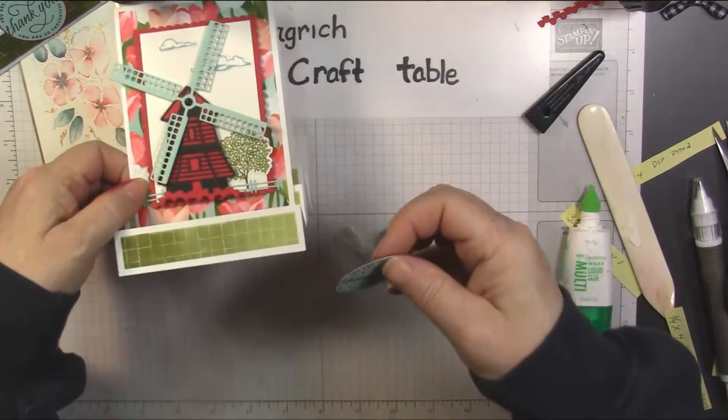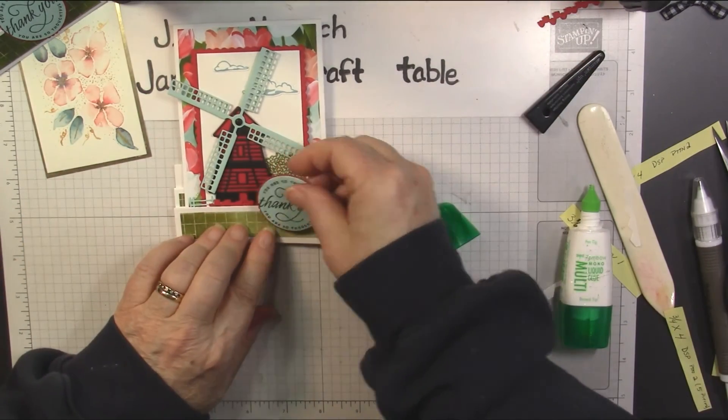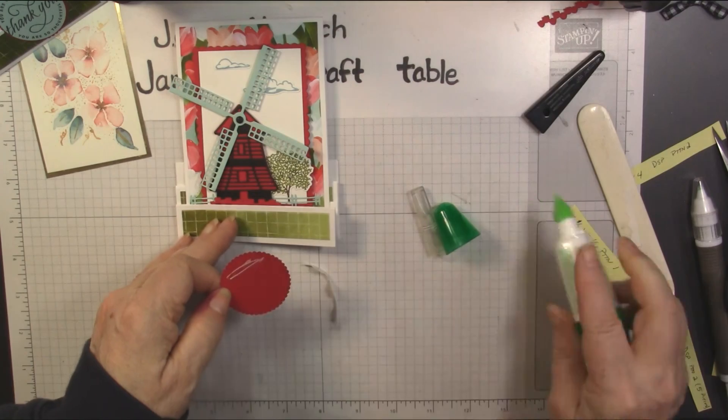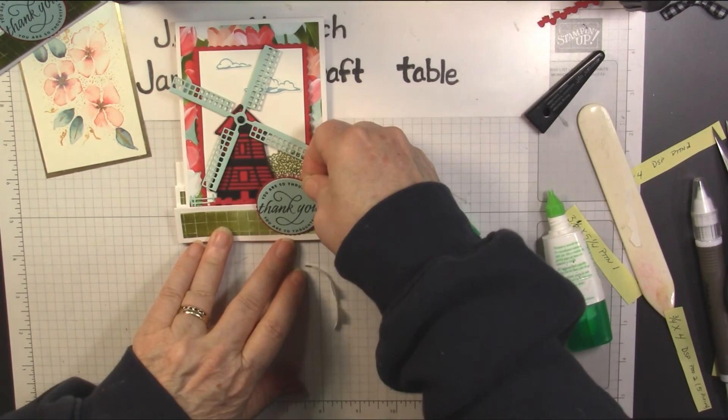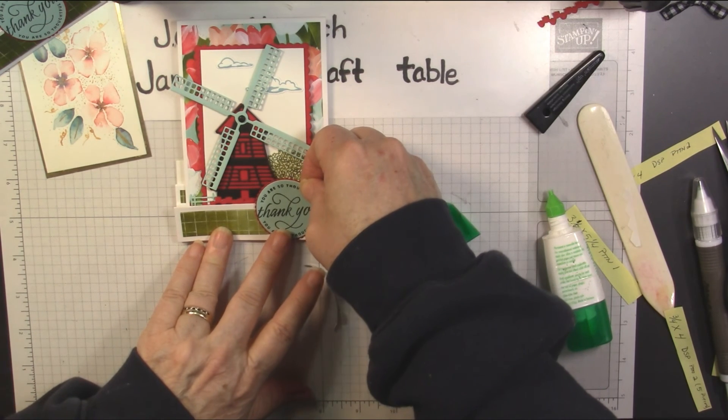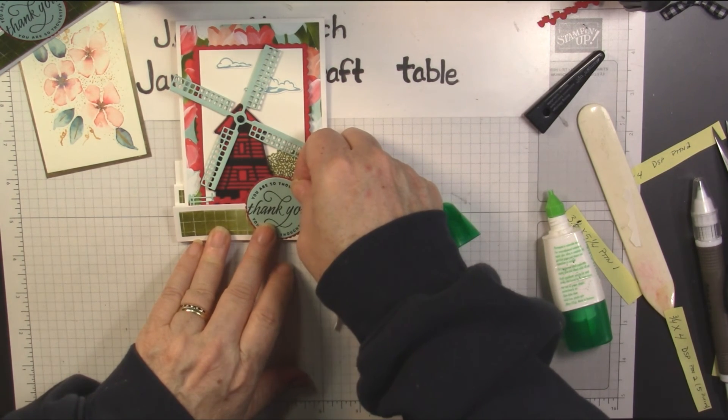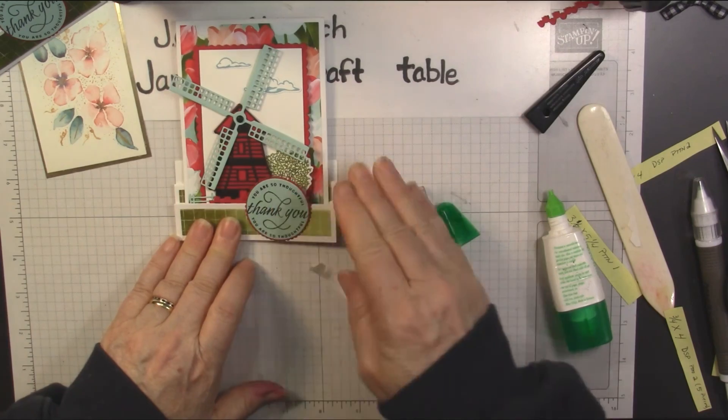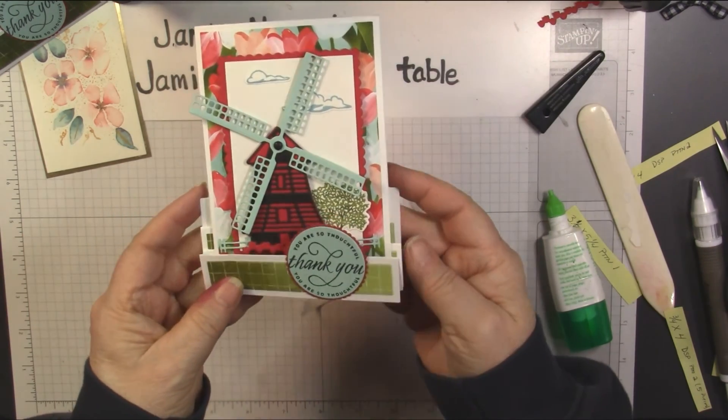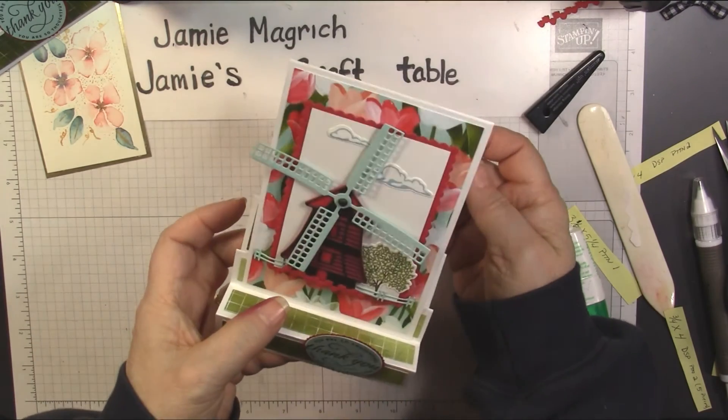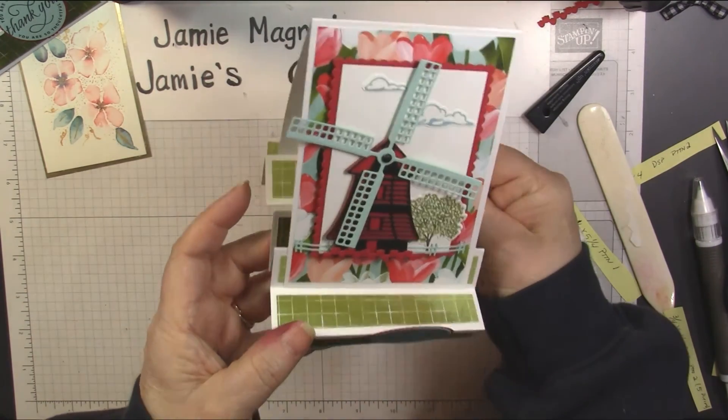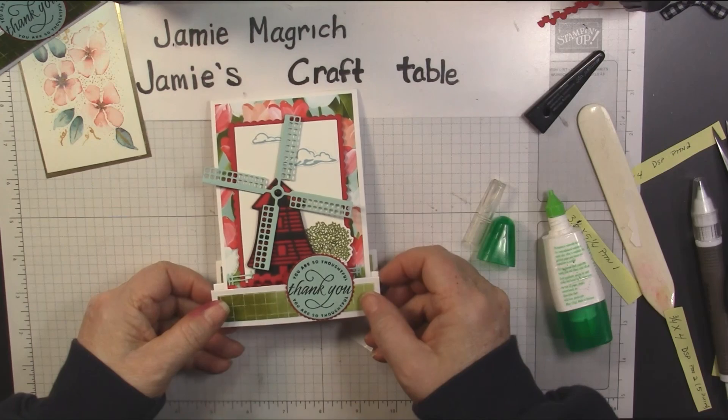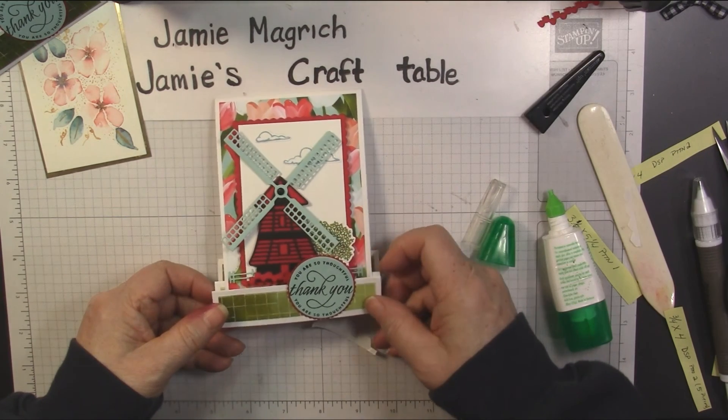Now we're going to take our sentiment. It's going to go on this piece in the front here, so we just need to put glue on the bottom half of it. There you go, there's the front of our card. And there's how it is when it opens. Thank you so much for joining me today at Jamie's Craft Table. I hope you have a great rest of your day, and I hope you can find a little bit of time to play with some stamps, ink, and paper.